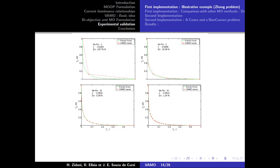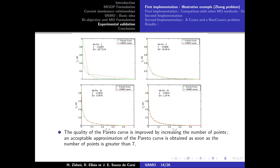By increasing the number of points of the Pareto curve, we obtain a more accurate curve with lower relative error. We noticed that the quality of the Pareto curve is improved by increasing the number of points. An acceptable approximation of the Pareto curve is obtained as soon as the number of points is greater than 7.